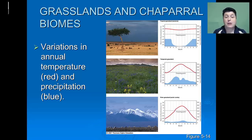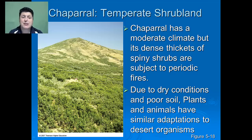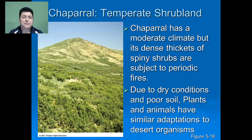As a result of having many months that are constantly cold, there is a type of soil that exists underneath the surface called permafrost that stays constantly frozen for up to two years at a time. An intermediate biome called the chaparral, or temperate scrubland, is sort of an in-between of a grassland and a desert. The chaparral has a moderate climate, but its dense thickets of spiny shrubs are subject to periodic fires. We see a lot of chaparral environments in northern, central, and southern California. Due to dry conditions and poor soils, plants and animals of the chaparral have adaptations that are similar to desert organisms.